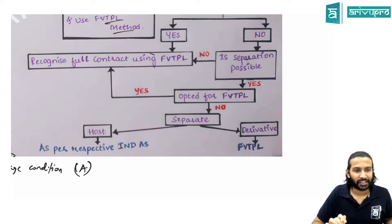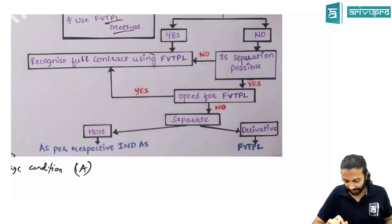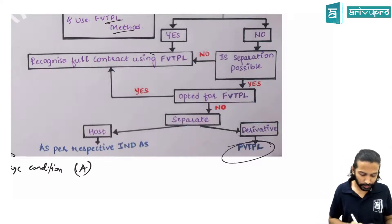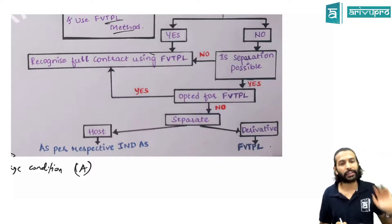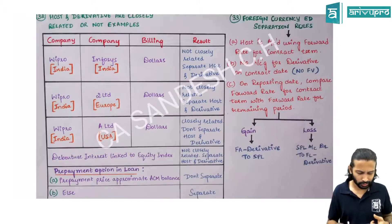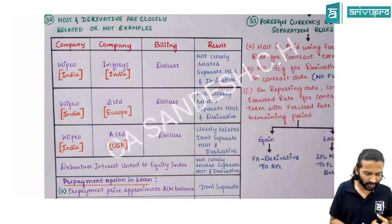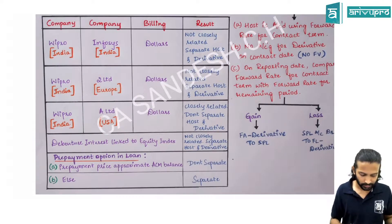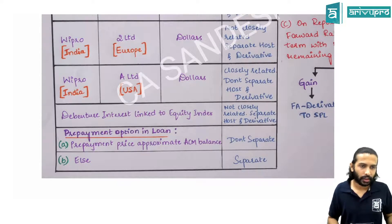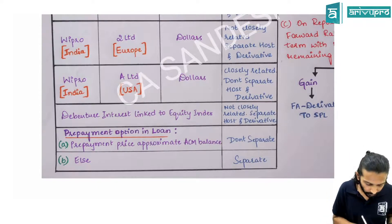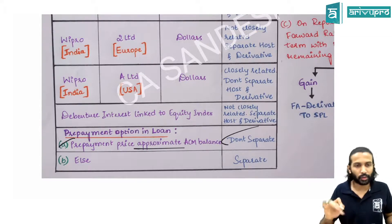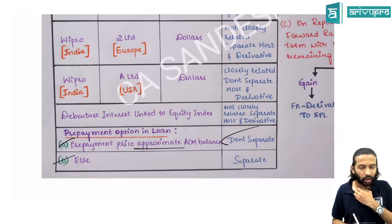Under hedge accounting, the derivative's gain/loss treatment may differ — this is the exception where the standard derivative-to-FVTPL rule breaks. For prepayment options embedded in loans: generally treated as not closely related, but if two conditions are met — (1) prepayment price approximates the ACM balance each year, or (2) compensation for lost interest (present value of lost interest) — then it is treated as closely related and need not be separated.